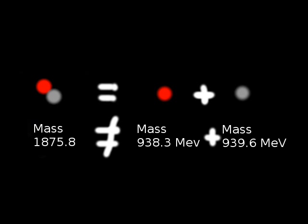Now, a deuterium is made up of a proton and a neutron that have been bound together. So if we add the mass of a proton to the mass of a neutron, we find that the total mass is 1877.9 mega electron volts.